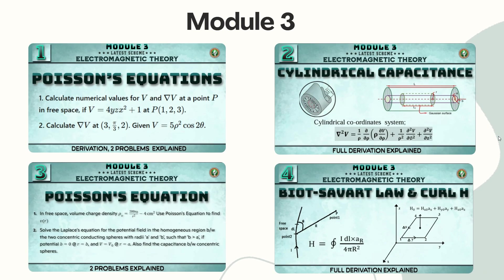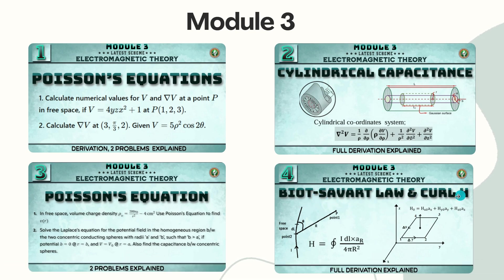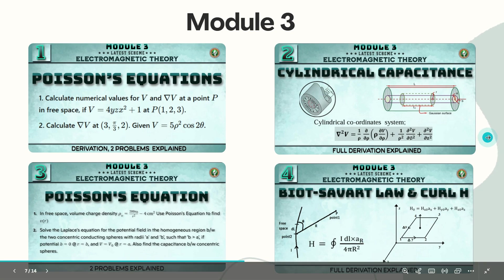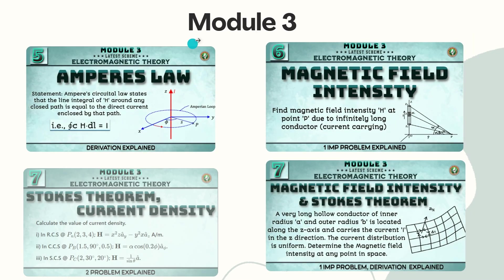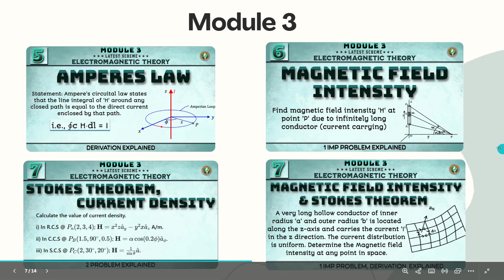From module 3, it starts with Poisson's equation — a simple derivation along with one problem. Then we dealt with cylindrical capacitance, more problems on Poisson's equation, and Biot-Savart's law and curl, including how they are interrelated. From module 3 we also covered Ampere's law, magnetic field intensity, Stokes' theorem, current density, and a related problem.